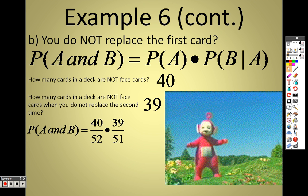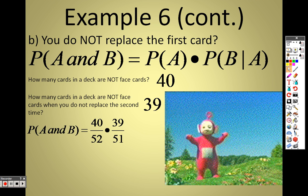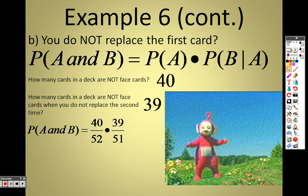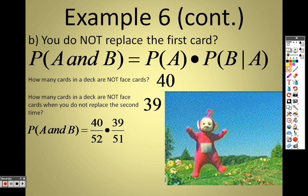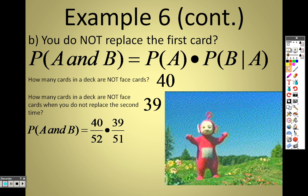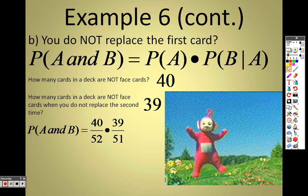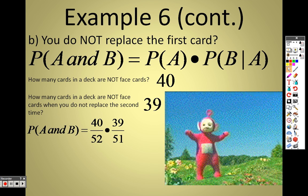First time you choose, 40 out of 52. So, the first time you choose, it's 40 out of 52 that are not face cards. The second time you choose, you have that card in your hand. You didn't put that card back out. So, the point I'm getting at is, you're holding that card in your hand. That's one less card in the deck.